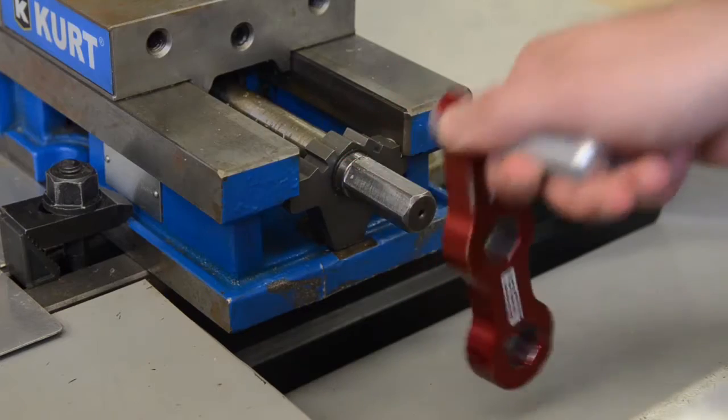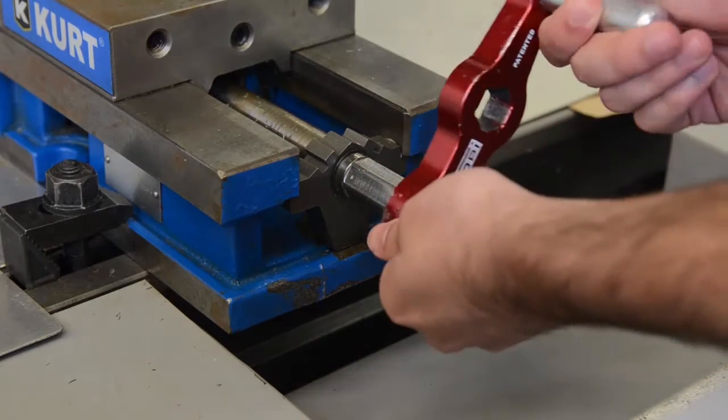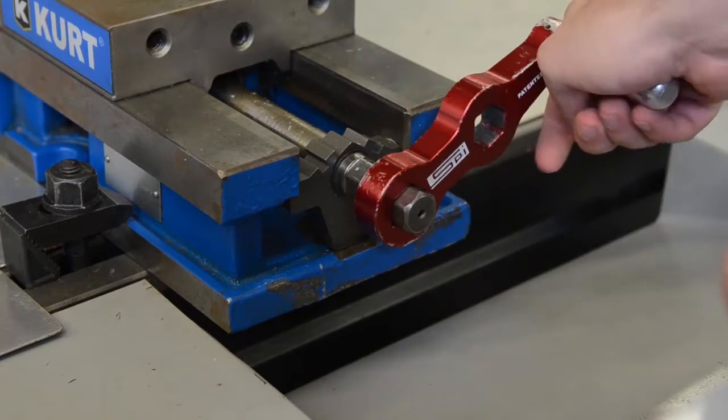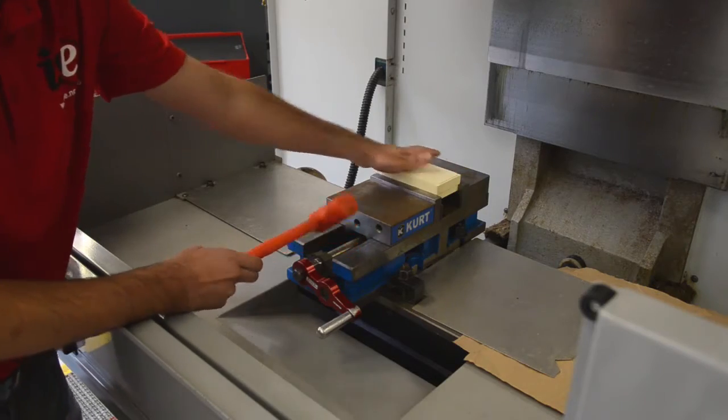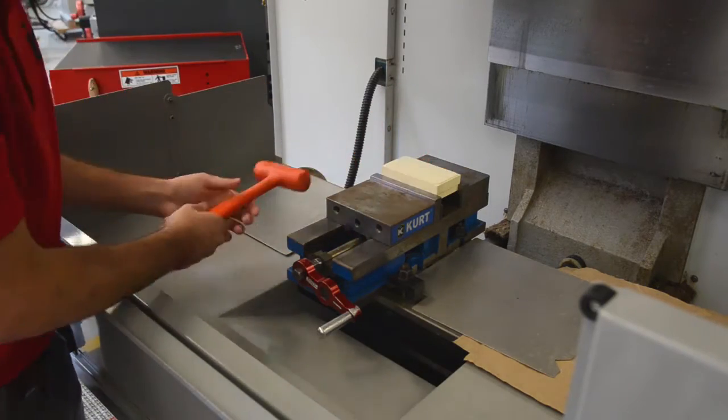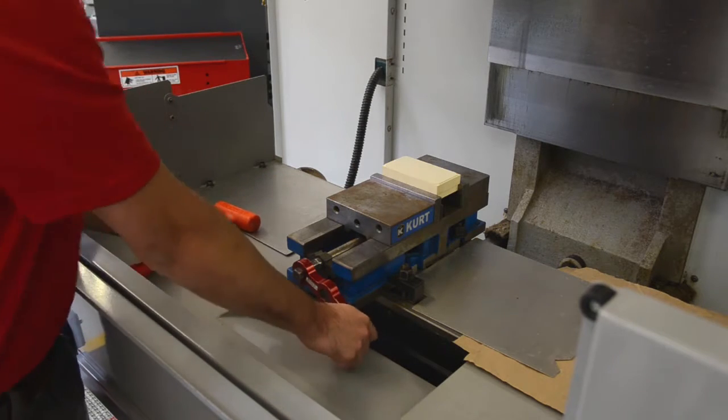If you want to tighten the vise, you take the handle off and move it to the other hole. To make sure that the part is flat against the parallels, you can hit it with the hammer a couple of times and tighten it one more time.